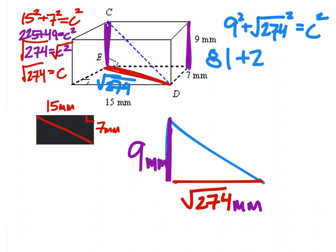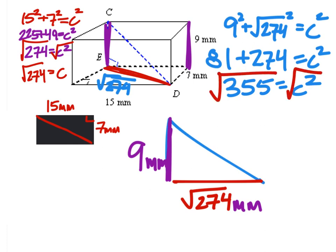So, we've got 81 plus 274 equals C squared. We've got 355 is C squared. We'll square root both. And we've got C equals...